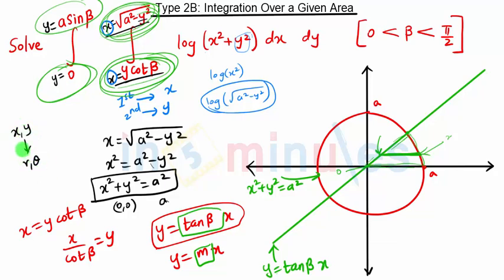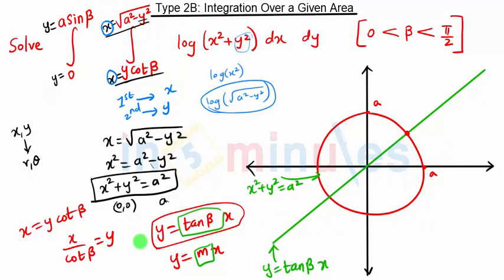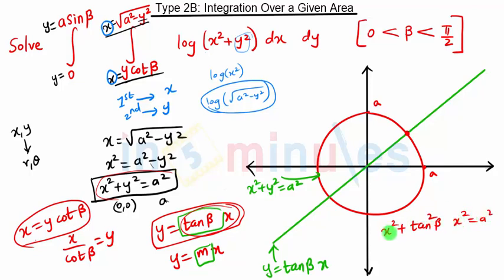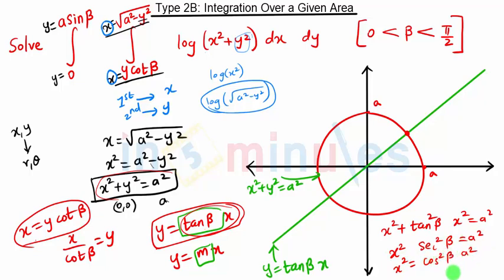Before converting to polar coordinates, we find this intersection point — the point of intersection of the line and the circle. To find it, we substitute x equals y·cot(beta), or y equals tan(beta)·x, into the circle equation x squared plus y squared equals a squared. This gives x squared plus tan squared(beta)·x squared equals a squared, so x squared times (1 plus tan squared(beta)) equals a squared. Since 1 plus tan squared(beta) equals sec squared(beta), we get x squared equals cos squared(beta) times a squared, so x equals plus or minus a·cos(beta).